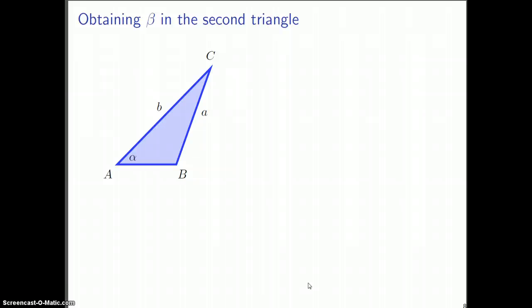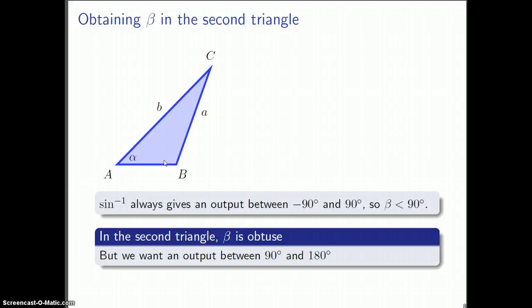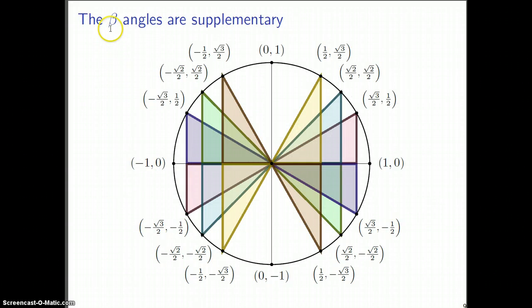Here's a picture of the second triangle. Here's this angle beta, which is actually obtuse. Let's just recall sine inverse always returns an output between negative 90 degrees and positive 90 degrees. The beta that we saw previously was smaller than 90 degrees. That's what you'd get if you apply sine inverse. But that's not good because we're looking for an obtuse angle beta, and that means we want an answer that's between 90 degrees and 180 degrees.